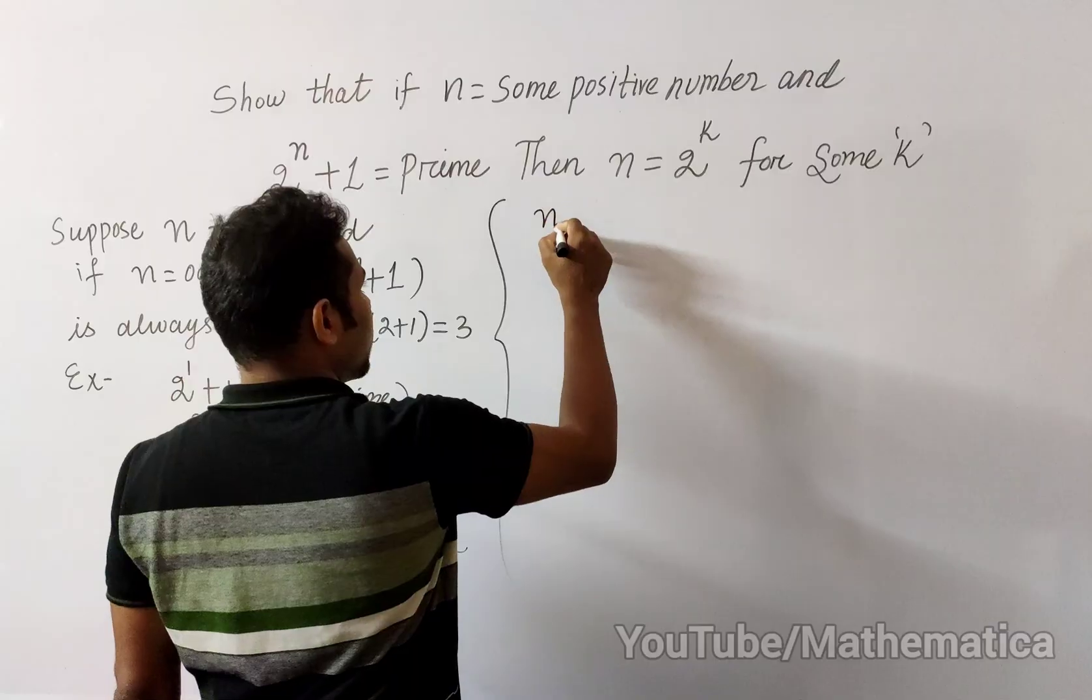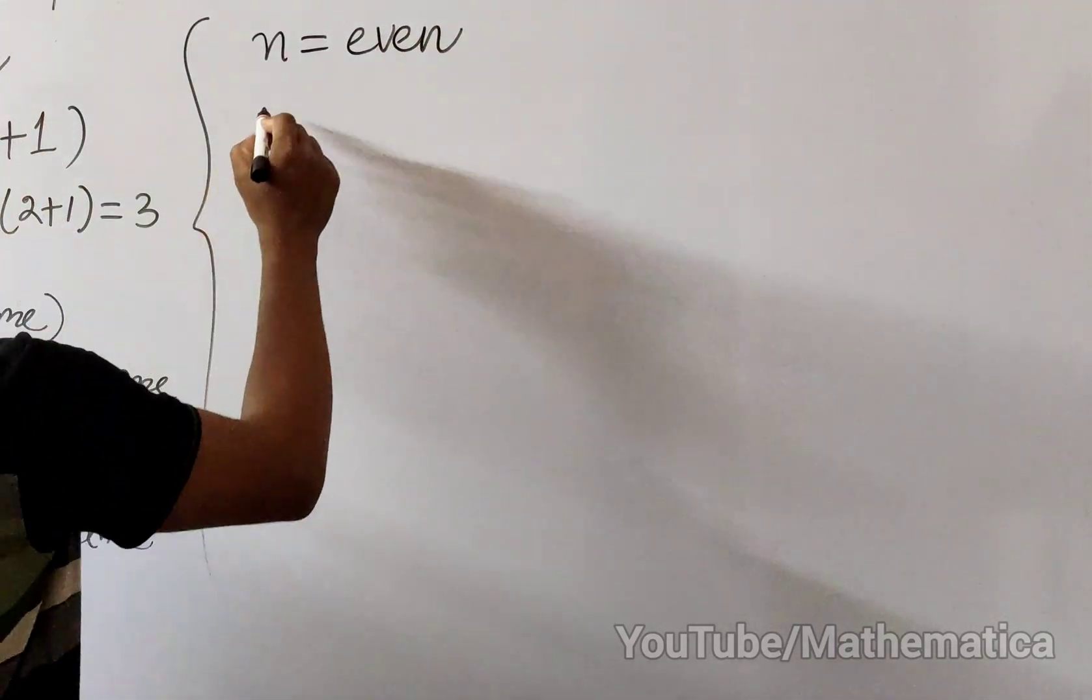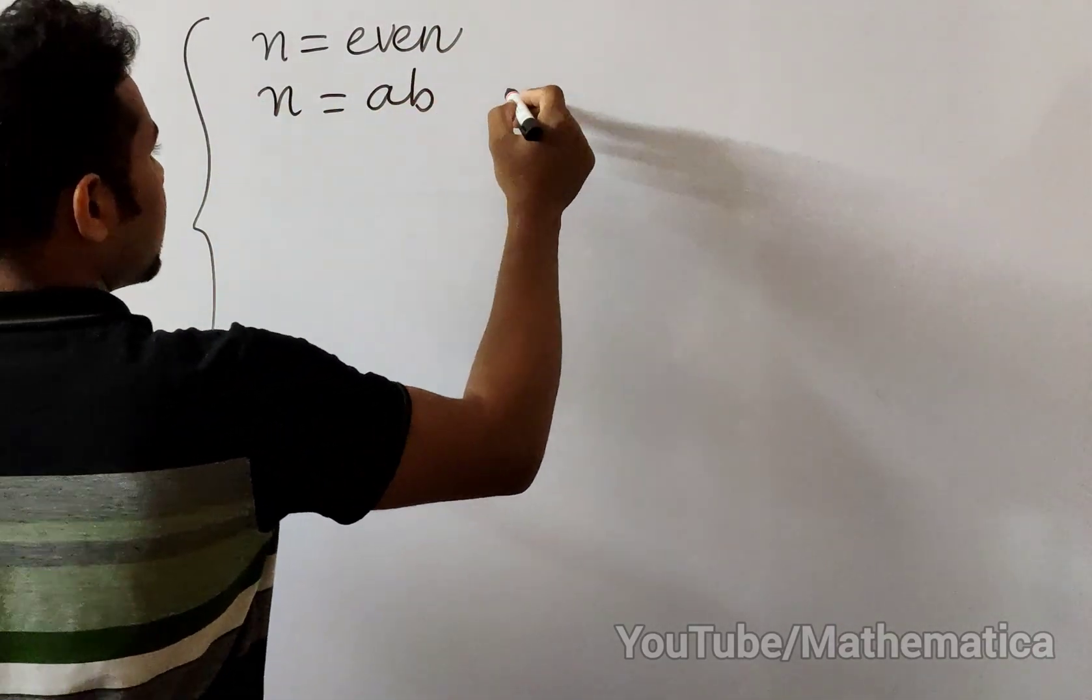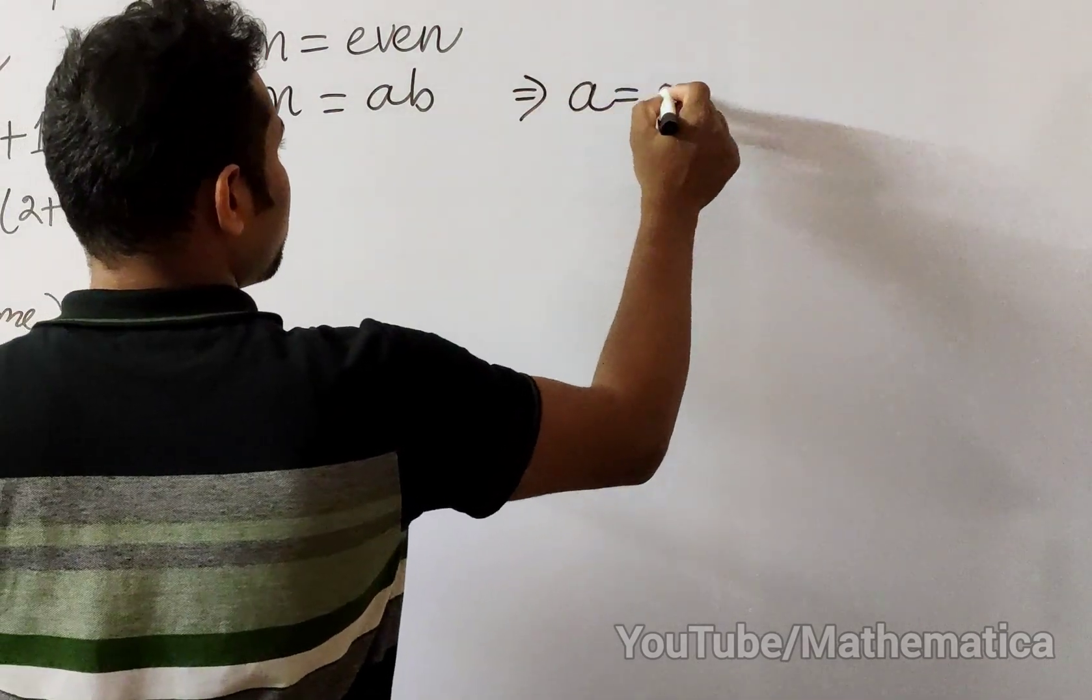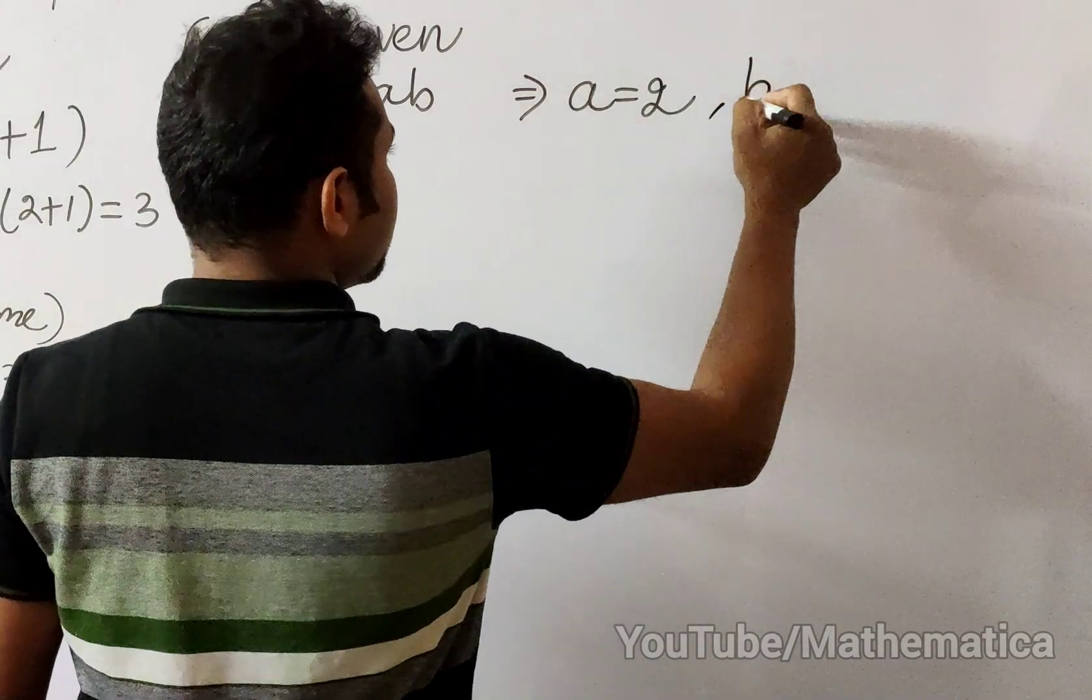It means n equals even. If n equals even and n equals ab, then let's say that a equals 2 because even number then one prime factor is always 2. Another one is b.